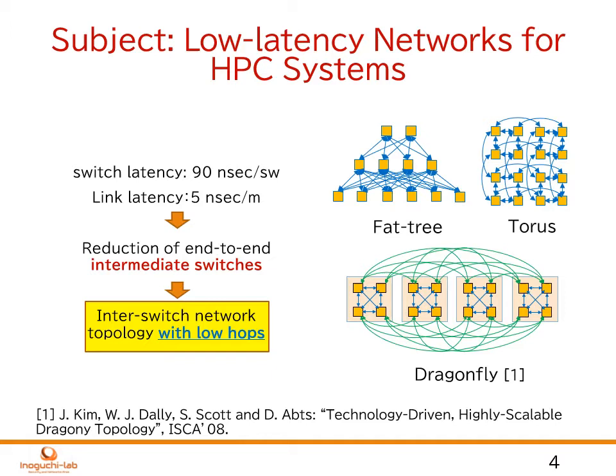The subject of this research is low-latency networks for HPC systems. When we focus on the end-to-end packet transfer, the switch latency is more dominant, which is 90 ns per each switch, while the link latency is 5 ns per meter. So we have to reduce the intermediate switches on the end-to-end network path. We can model the inter-switch networks by network topologies among the switches, and construct a low-latency network by minimizing the number of hops.